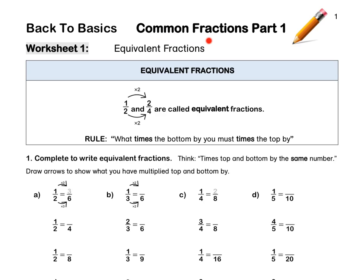Common Fractions Part 1: Equivalent Fractions. One half and two quarters are called equivalent fractions. When we write equivalent fractions, the rule is: what we times the bottom number by, you must times the top number by.